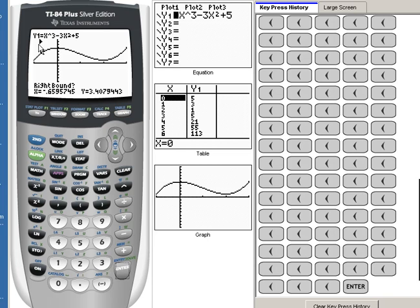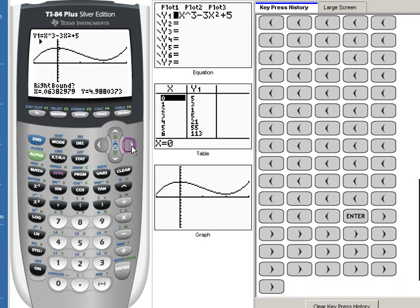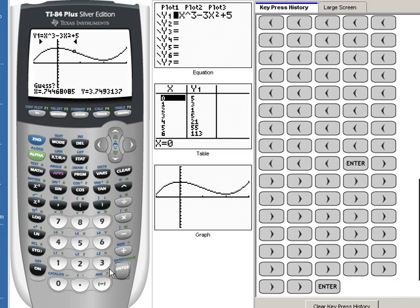Notice it put this little triangle up here in the corner. That's important. Now it's asking me for the right bound. So now I want to move to the right until I am well on the right hand side of where that maximum point is. So that's probably good. And I'm going to hit enter.